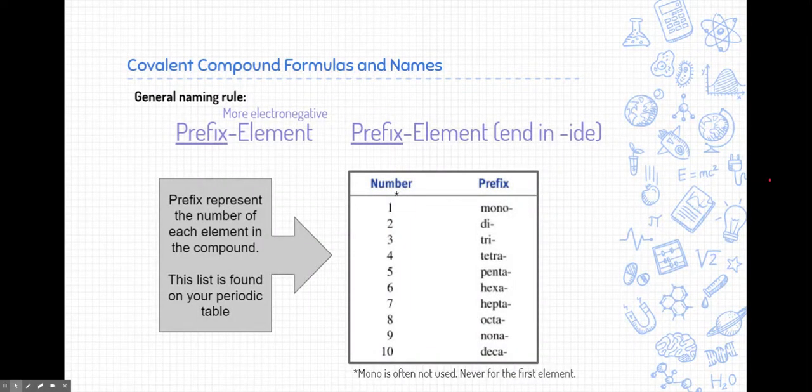Switching gears up a little bit, let's talk about covalent compound formulas and names. Similar to when we name ionic compounds, covalent compounds have their own rules for naming and writing formulas. Here's the general naming rule. We always start with a prefix before the elements, and that's true for both the first element and the last element. The first element is typically more electronegative than the last element, so that's typically what we start with. But the last element ends in ide, similar to how some of the ionic compounds do.